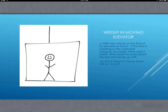A 500N man stands on the floor of an elevator, as shown. If the man is standing on a scale that measures his weight, what does it read? What does the scale read if the elevator moves with an acceleration of 2 meters per second squared? What if it moves down with an acceleration of 2 meters per second squared?